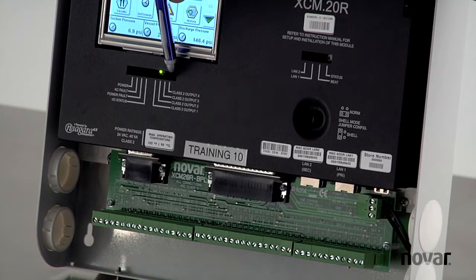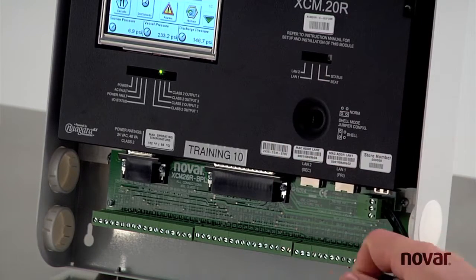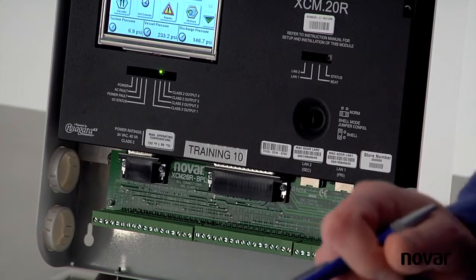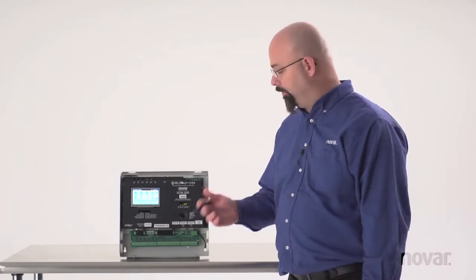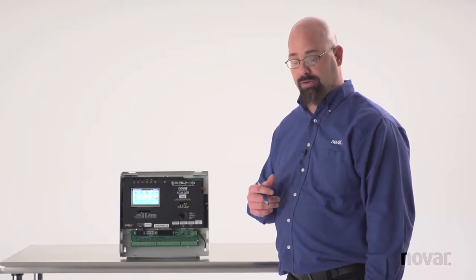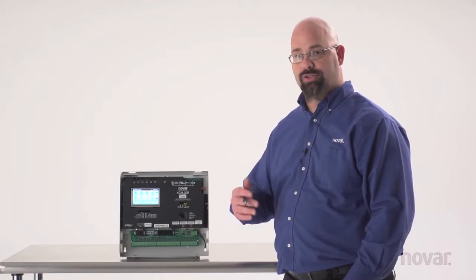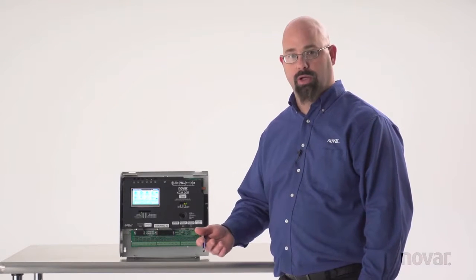So if I have an LED right here for output number 4, that's going to energize the coil for output number 4. Now if we remember from the Understanding Outputs video, these are Form C relays, so I could wire something up normally open or normally closed.